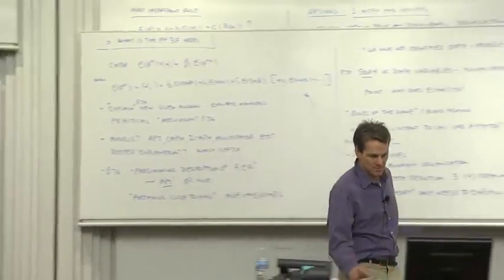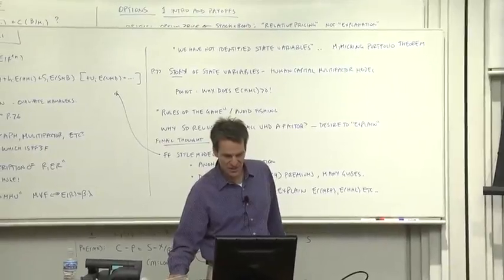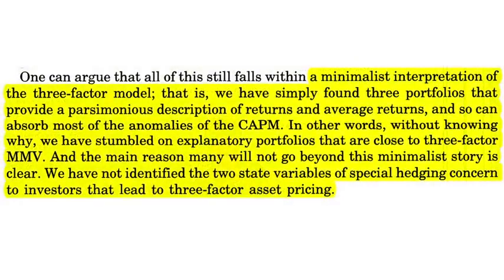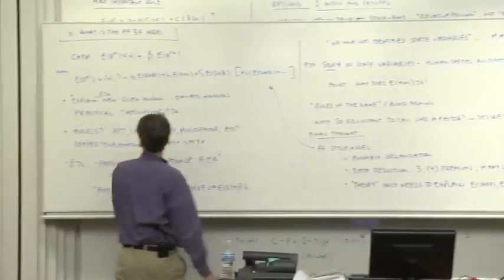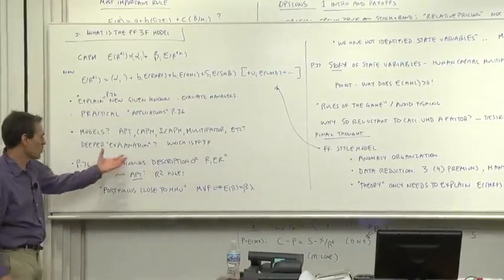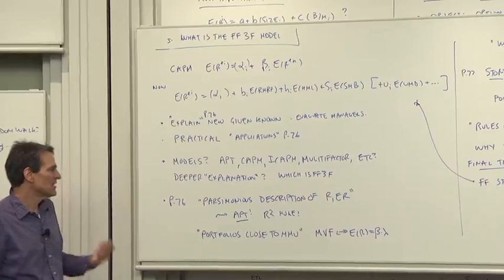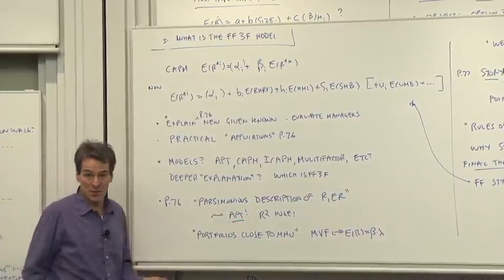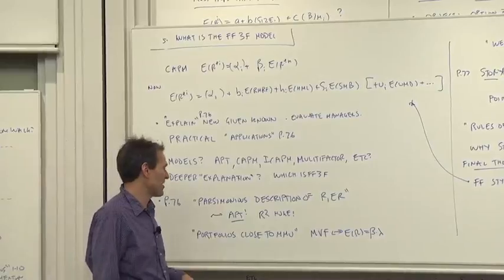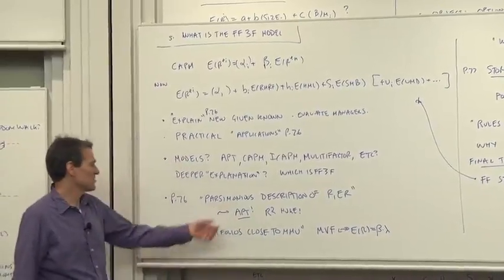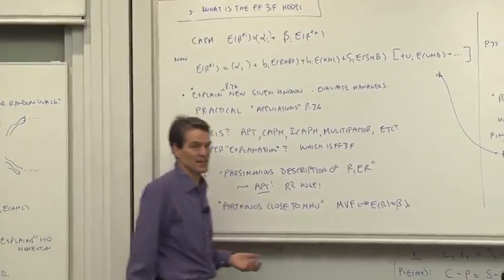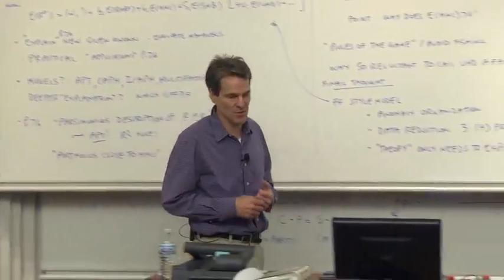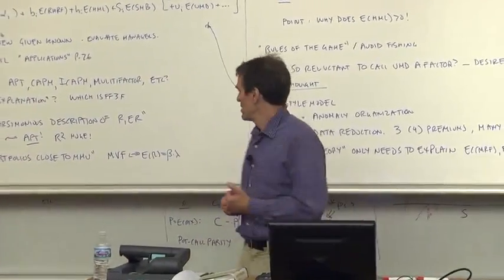So what do they say about that? Well, at a minimum, they say, a minimalist interpretation of the three-factor model is that we have found a parsimonious description of returns and average returns. We looked hard at what those words meant before. Another way of saying it is, well at least it's an APT. The r-squareds are huge, so the assumptions of the APT are satisfied, and the alphas are fairly small, so the results of the APT ought to be satisfied as well. That's what a parsimonious description means.